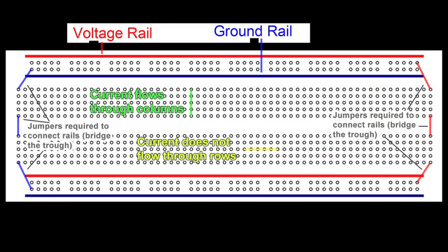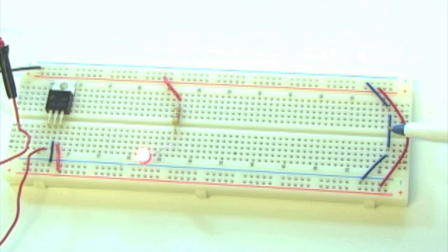Here's how breadboard continuity works. Because our rails are now bridged, we can access ground and positive 5V potentials on either side of the board. Always remember that the trough dividing our board horizontally represents a break in continuity.